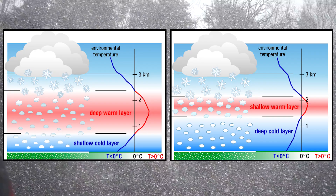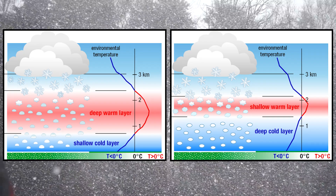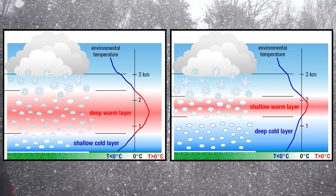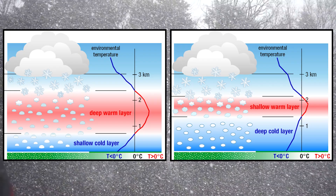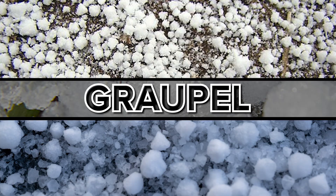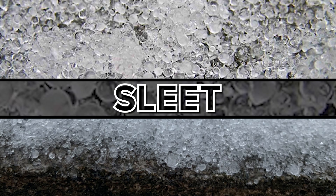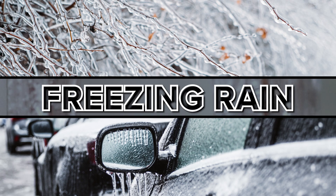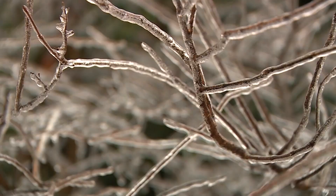But winter isn't all about snow. When snow falls through layers of air that are above freezing, three different things can happen: one, graupel, which is known as soft hail; two, sleet, which are ice pellets; and three, freezing rain that can cover everything in ice. When freezing rain lasts for several hours, it becomes an ice storm.